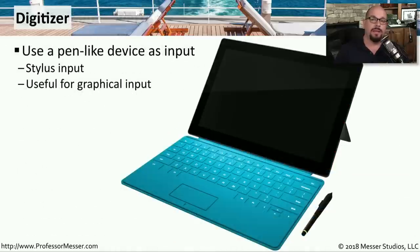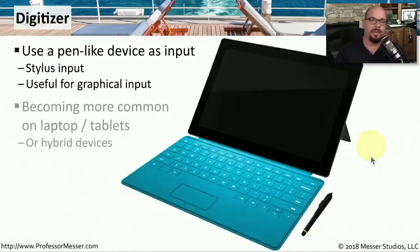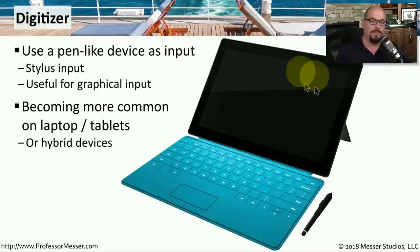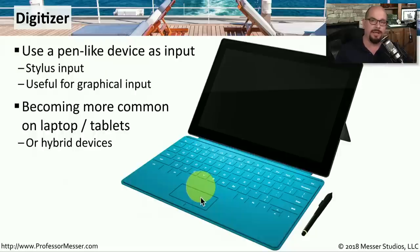Some laptop displays allow you to write directly on the display because the display itself is a digitizer. You would use a pin-like device, like this stylus, to touch the screen and draw on it as if it were a piece of paper. This is becoming more common on laptops, tablet computers, and hybrid computers like this one that could have a keyboard similar to a laptop but a screen similar to a tablet — allowing you to use the stylus to draw on the screen or use the keyboard both at the same time.